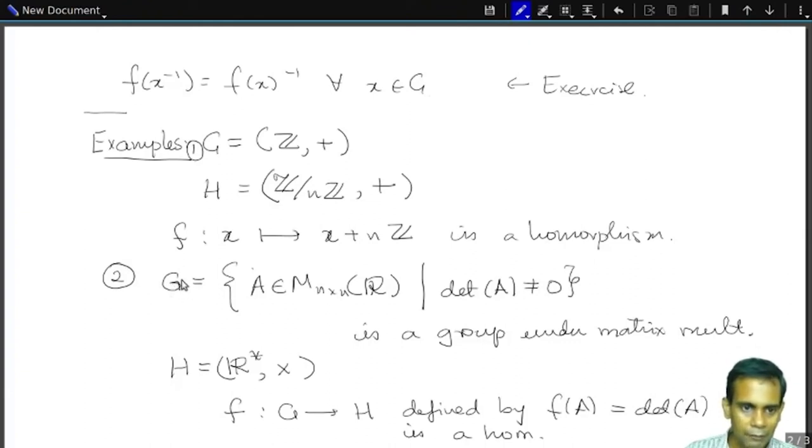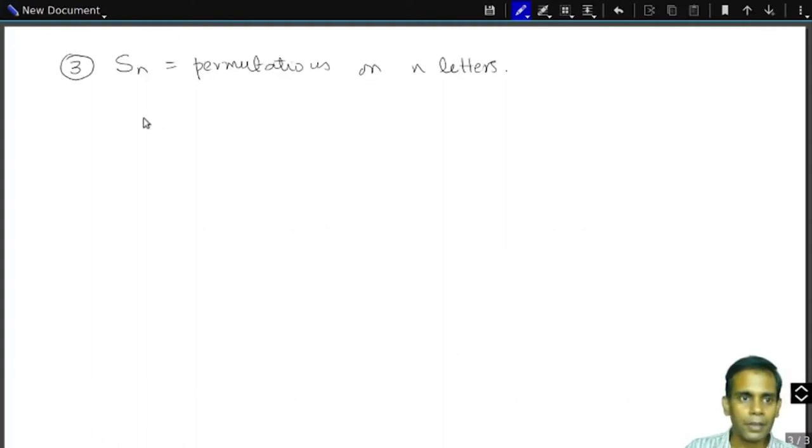We already know about this group S_N permutations on N letters. Now, I'll define a homomorphism from this to the group of the previous page. Let's give this a name. So let's call this group G, when I say G, I'm going to talk about this group G of invertible matrices, n by n matrices with real entries. And so G equals A belongs to M_n(R), such that determinant of A is non-zero. So that's a group under multiplication.